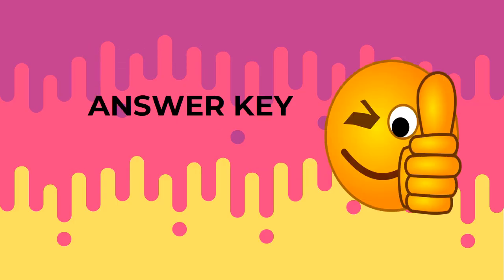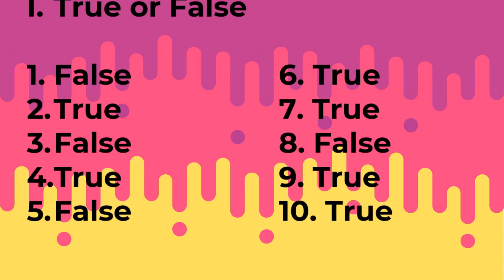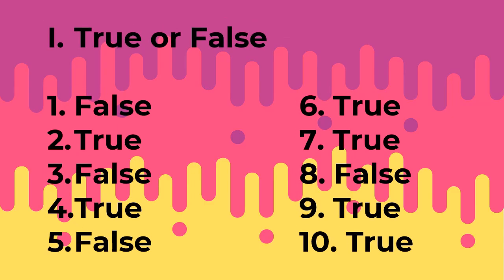Now that you're done with the quiz, it's time to check your answers. These are the answers in Test 1. Number 1: False. Number 2: True. Number 3: False. Number 4: True. Number 5: False. Number 6: True. Number 7: True. Number 8: False. Number 9: True. Number 10: True.